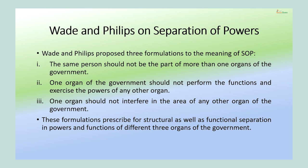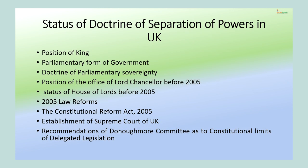To summarize: number one, one person should not be part of more than one organ of the state. Number two, one organ of the state should not exercise the powers or perform the functions of the other organ. And number three, one organ of the state should not interfere in the area of the other organ. These formulations prescribed by Wade and Phillips prescribe for structural as well as functional separation of powers and functions of the different three organs of the state.